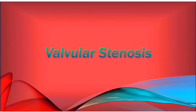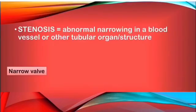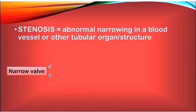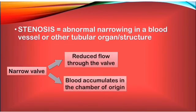We will now take each type of valvular defect and present a few general characteristics, beginning with valvular stenosis. A stenosis represents an abnormal narrowing in a blood vessel or other tubular organ or structure. In our case, we discuss the stenosis of a cardiac valve — a narrow valve which fails to open completely, resulting in reduced flow through that valve with less blood getting into the ventricle or vessel. The blood in the chamber of origin has a harder time being ejected into the next compartment and starts to accumulate, creating an increased pressure load.